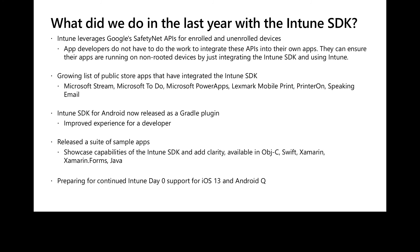The Safety Net APIs detect if the device has been rooted or compromised in any way. Popular apps such as Android Pay and Netflix are using these APIs to ensure devices are not running unrooted and potentially bypassing things like payment services. We've also grown our ecosystem of apps that support the Intune SDK with many more Microsoft apps such as Microsoft Stream, ToDo, and Power Apps, as well as other third-party enterprise apps.